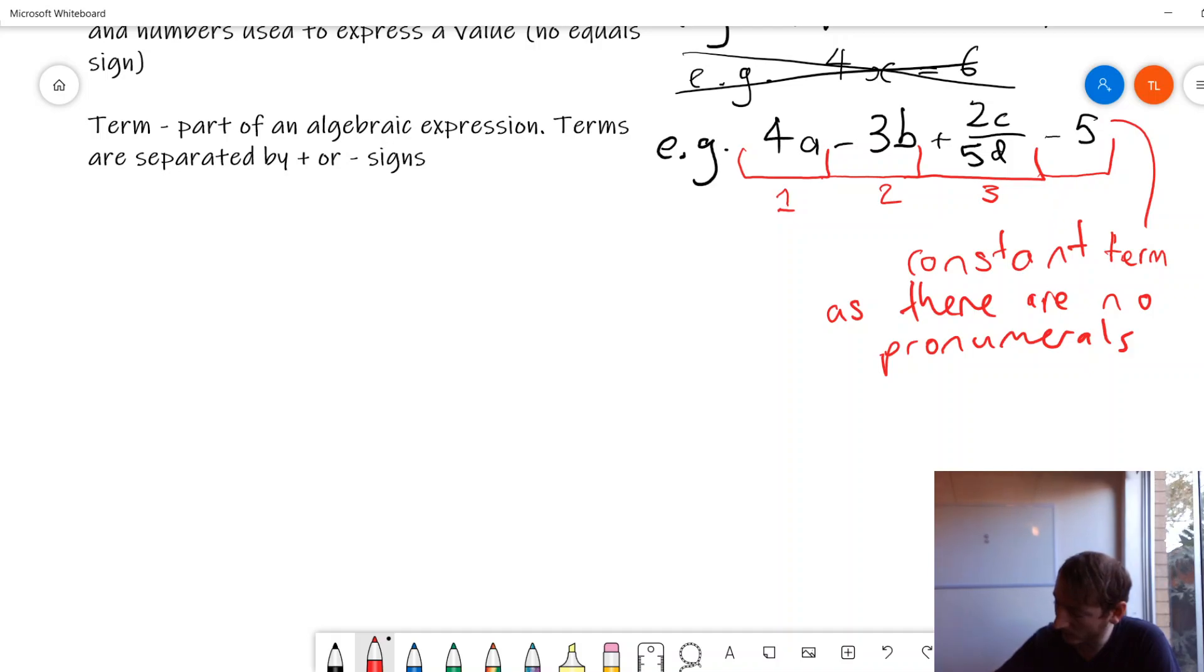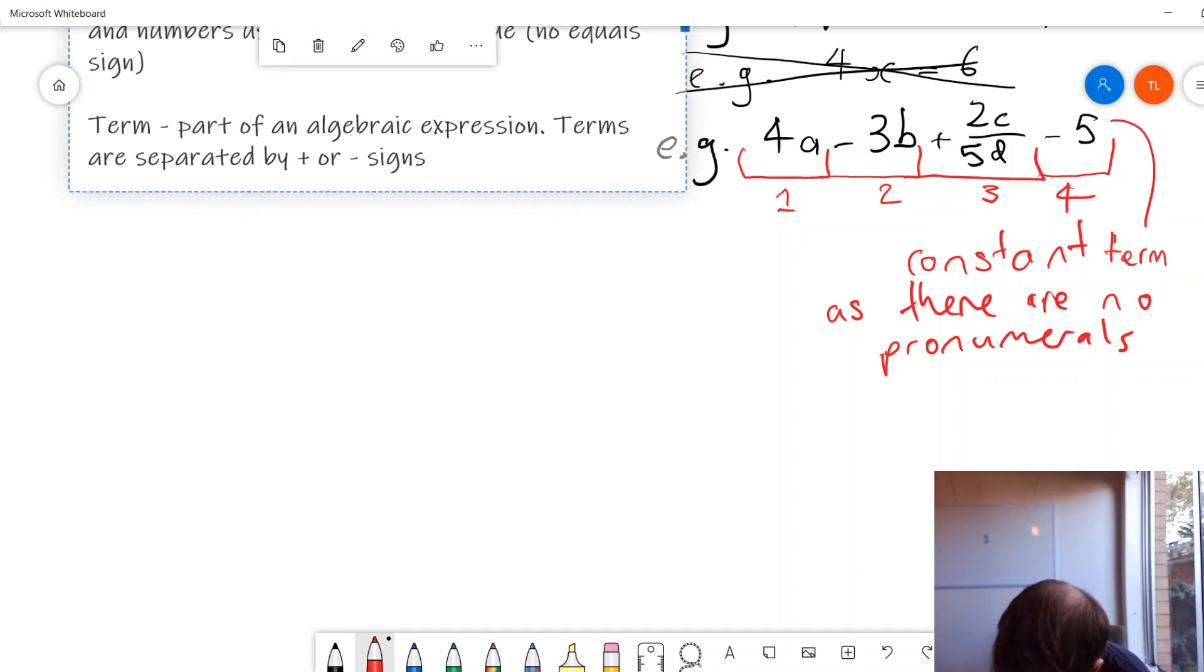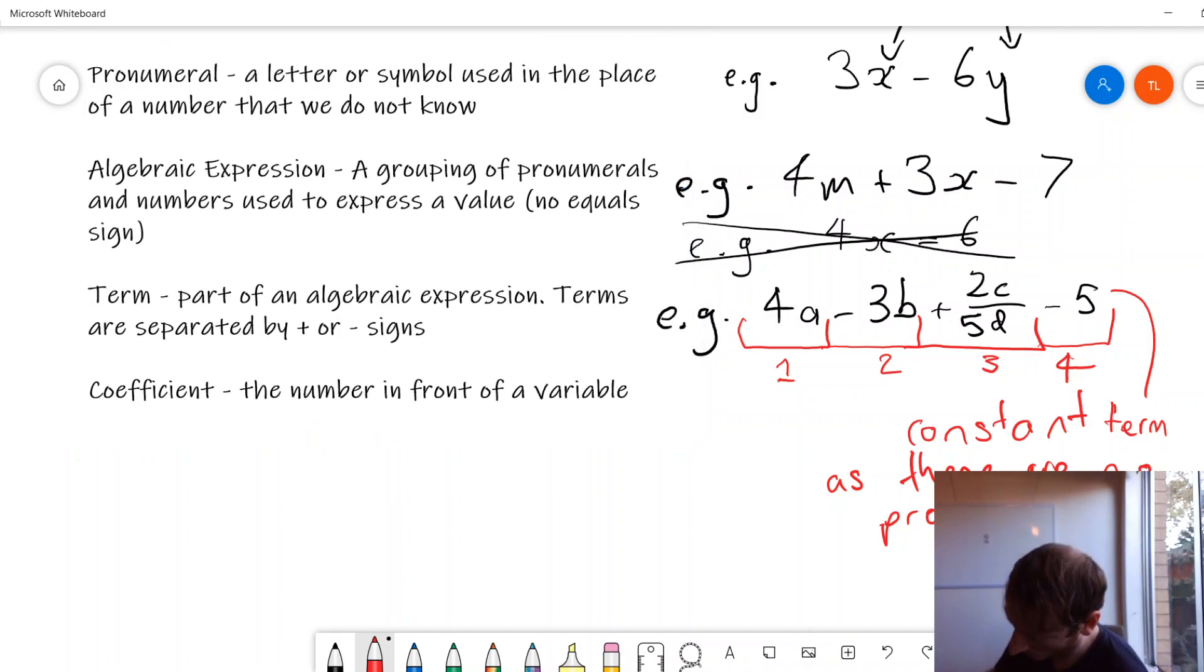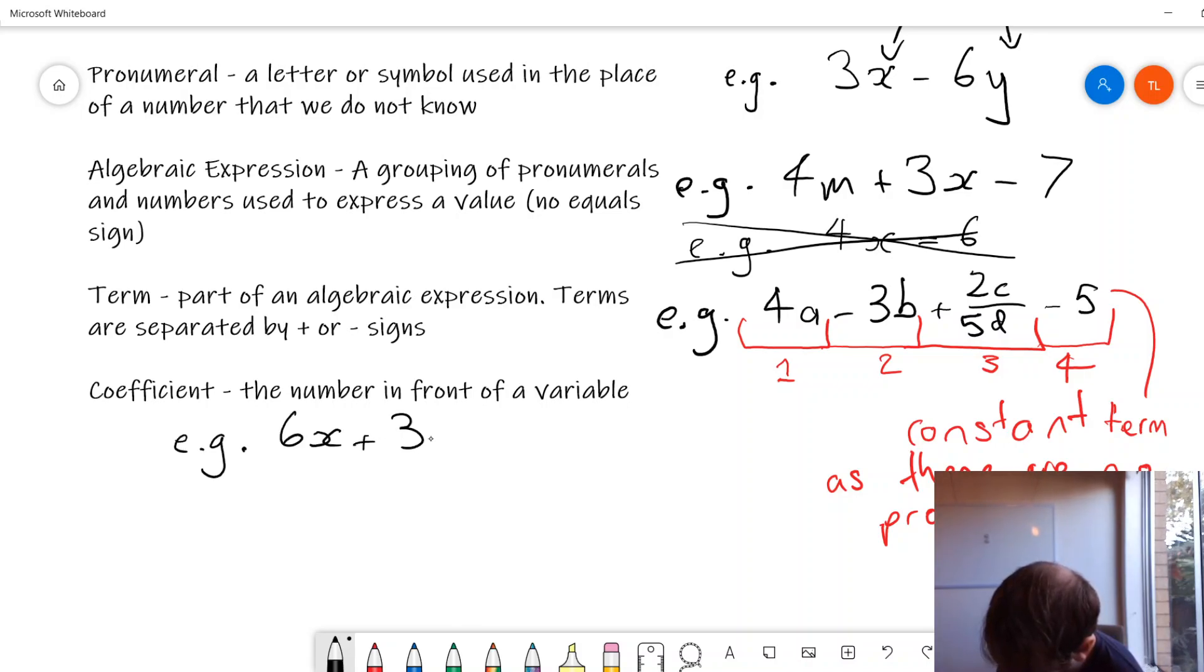Now let me just rub that out and write it near to 4. All right so that is term. Another one, coefficient. The number in front of a variable. Might have to do this e.g. below. 6x plus 3y minus z, let's say, plus w. Let's go back.